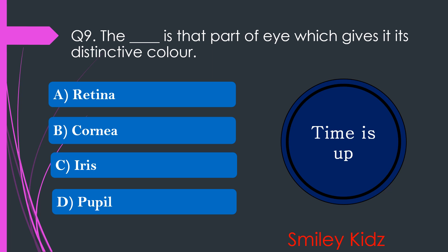Your time is up and the right answer is option C. Iris. The iris is that part of the eye which gives it its distinctive color.